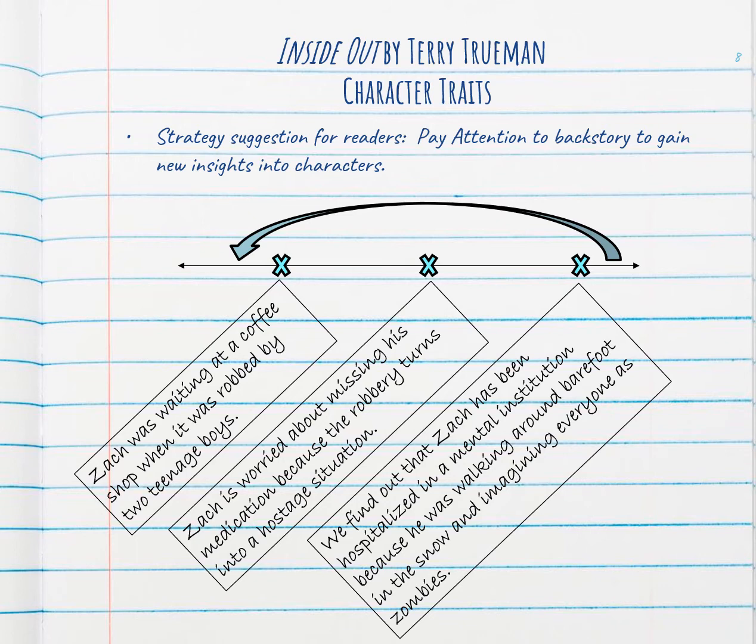It says that Zach has been hospitalized in a mental institution because he was walking around barefoot in the snow and imagining everyone as zombies.